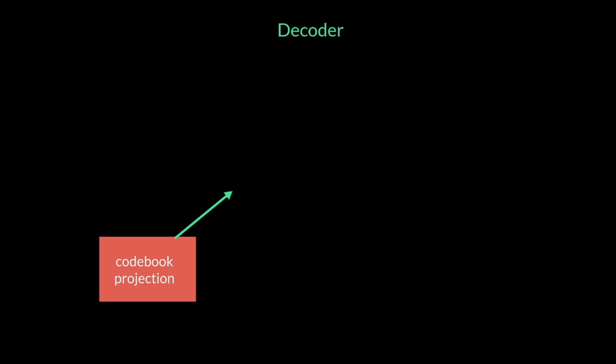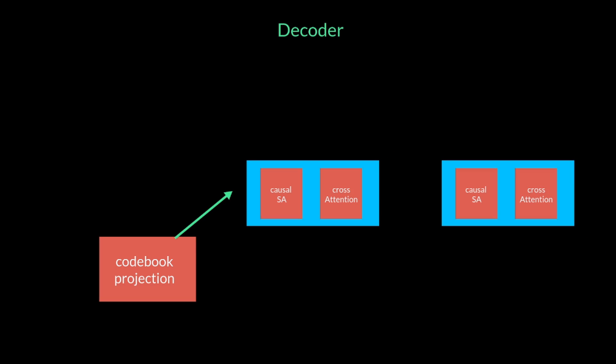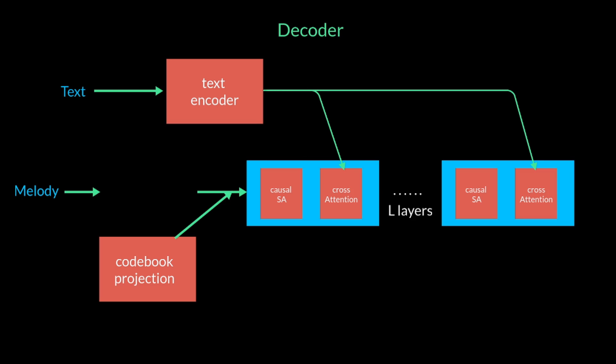Now, these codebook projections, along with the positional embeddings, are then passed to a transformer-based decoder. There are L layers in the decoder, with each layer consisting of a causal self-attention and cross-attention block. The decoder additionally takes as input the conditioning C, which can either be text or melody. If it is text, the cross-attention block that takes the conditioning signal C, after the text has been encoded by a standard encoder, say T5. Now, if it is melody, they pass the conditioning tensor C as prefix to the transformer input, after being converted to a chromogram and processed.